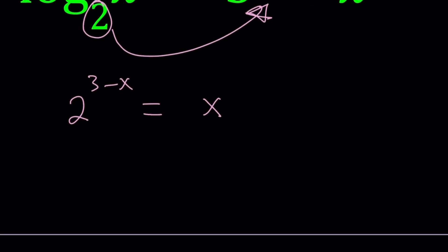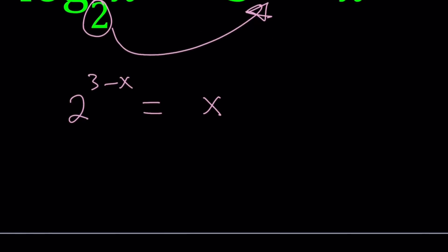Let's go ahead and write 2 to the power 3 minus x as 2 to the power 3 divided by 2 to the power x, and that should equal x. Maybe by this time you already guessed the solution — that's perfectly fine. But I want to bring you closer to the solution so when you're guessing, it's actually going to be very obvious. I know this is also simple, but I just want to show the general method.